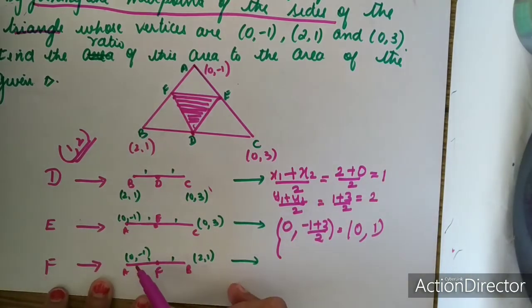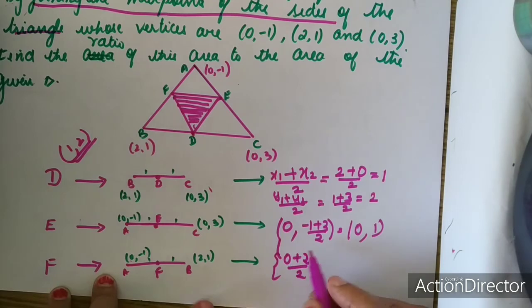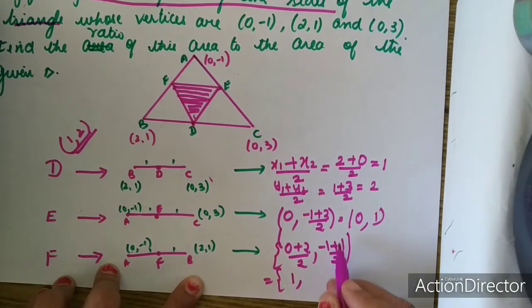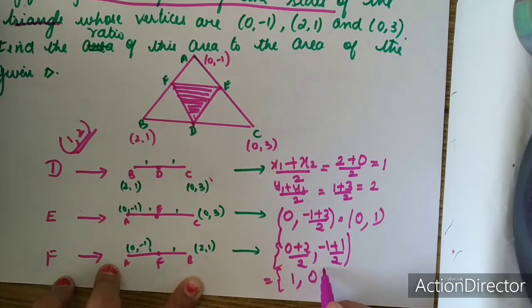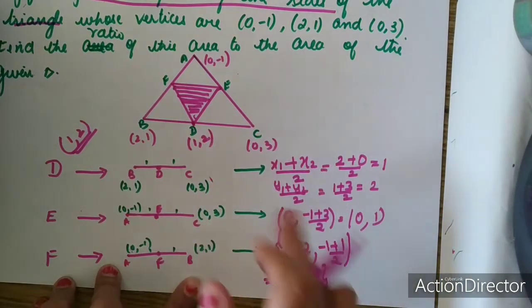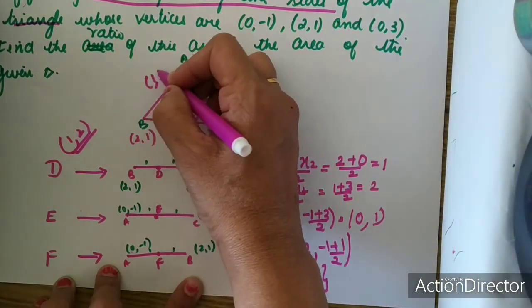Now coming to point F: 0 plus 2 divided by 2, which equals 1. And minus 1 plus 1 divided by 2, which equals 0. So the coordinates of F are (1, 0). Now I have found all 3 coordinates: D is (1, 2), E is (0, 1), and F is (1, 0).